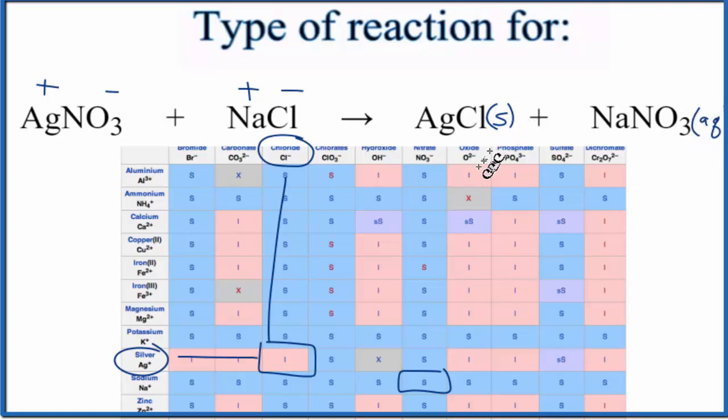So if we have a solid, that means the reaction takes place. So this double displacement reaction for AgNO3 plus NaCl, this reaction does happen. We have a solid, which is a precipitate. This is Dr. B with the type of reaction for AgNO3 plus NaCl. Thanks for watching.